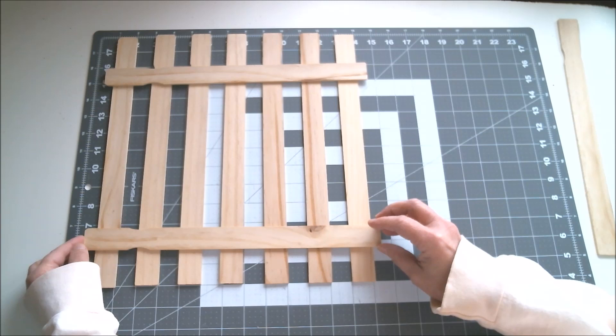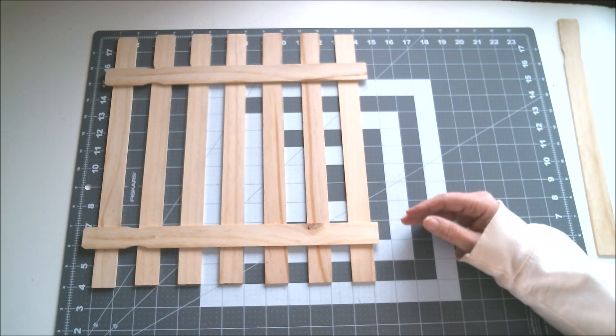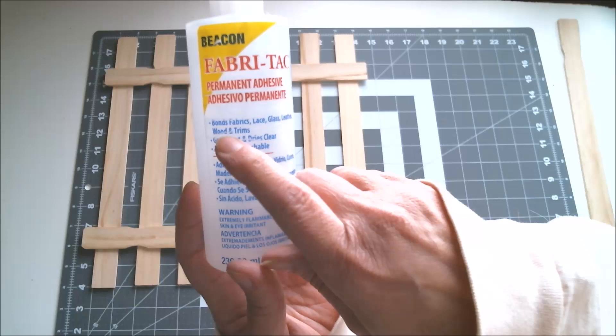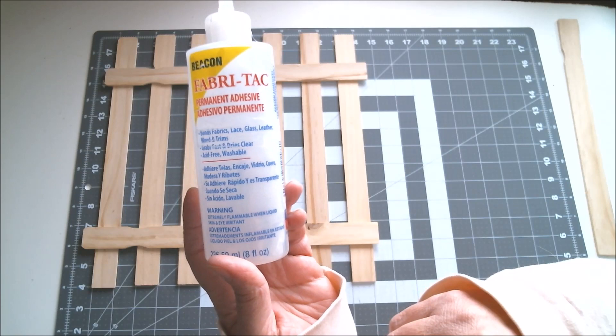I have it about two inches up from the bottom and approximately two inches down from the top. I'm going to be using my Beacon Fabri-Tac to adhere those and this is good for wood and trims. I use this all the time to glue wooden things together like frames so it'll be perfect for this project.